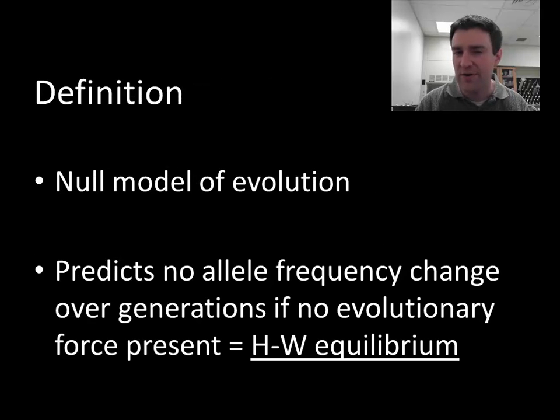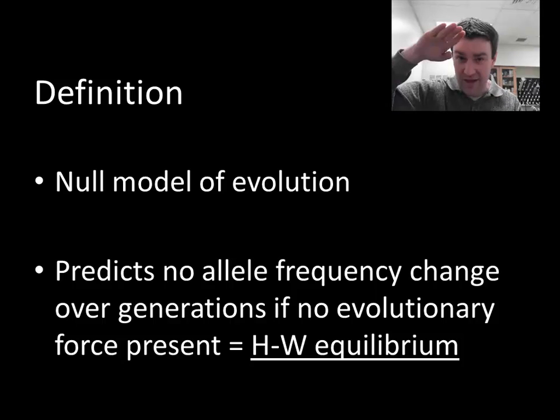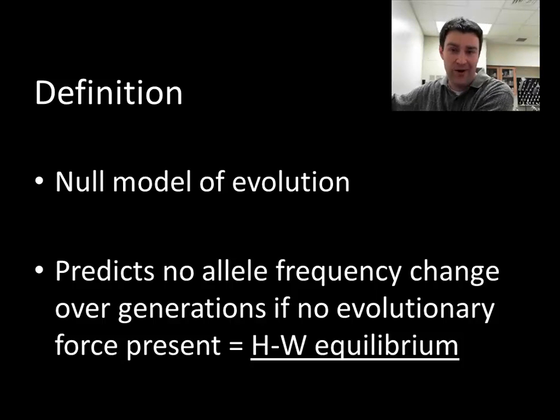So what is Hardy-Weinberg equilibrium? It's a null model of evolution. Hardy-Weinberg equilibrium exists when evolution is not occurring, or if no evolutionary force is present. The allele frequency should not be changing over generations. Make sure you're clear that Hardy-Weinberg equilibrium is not when the two allele frequencies are equal. Whatever they are, a population is in Hardy-Weinberg equilibrium if it stays that way over generations.